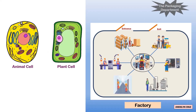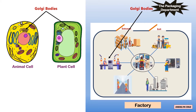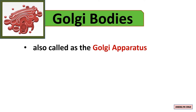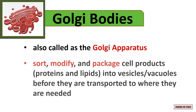The packaging department in the factory represents Golgi bodies. Inside this room, the products of the factory are sorted and packaged, ready to be delivered to different locations. Golgi bodies, also called the Golgi apparatus, are organelles that sort, modify, and package cell products such as proteins and lipids into vesicles or vacuoles before they are transported to where they are needed.